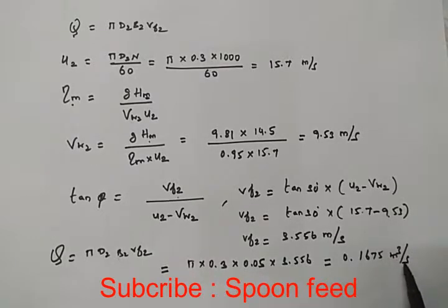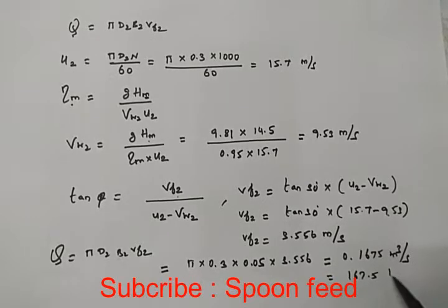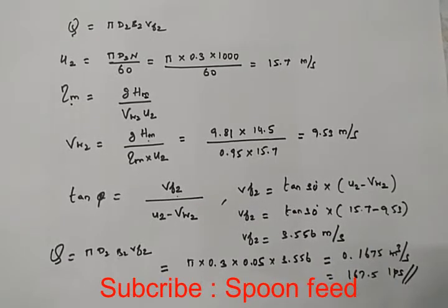Converting to liters per second: 1 cubic meter equals 1000 liters, so we have 167.5 liters per second.